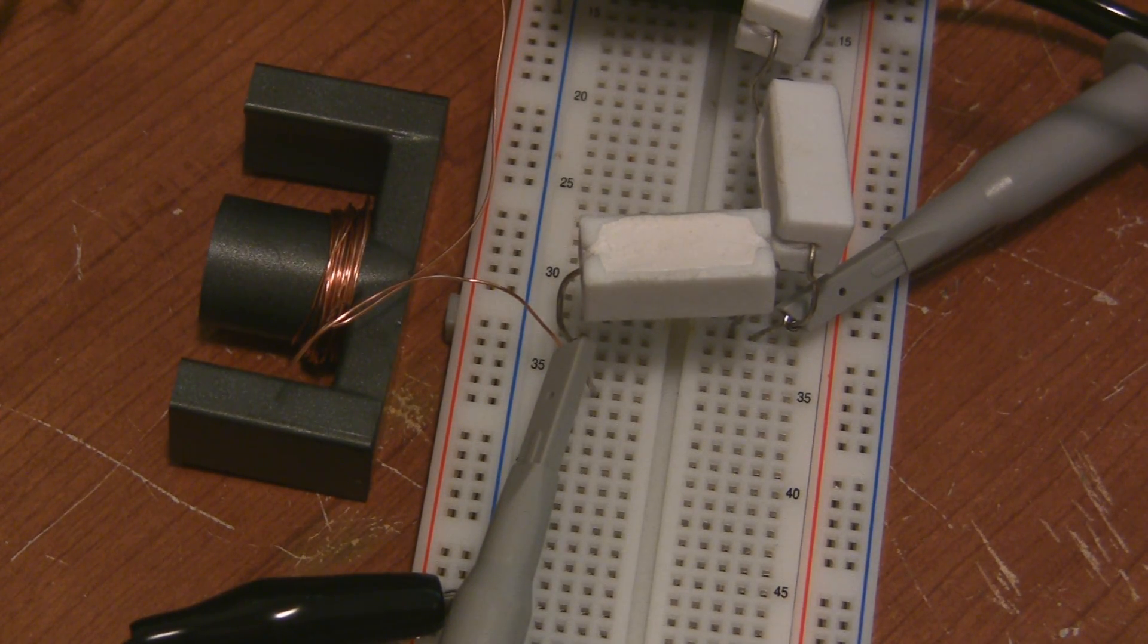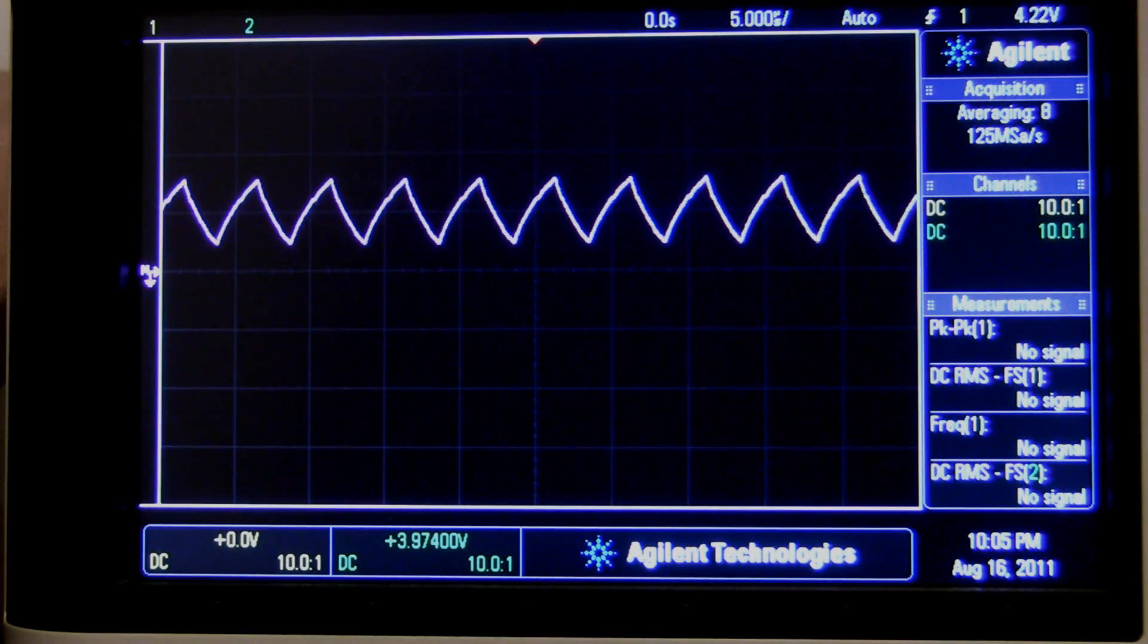When I add the ferrite core, increasing the inductance to 42 micro Henrys, now there's a lot more filtering.